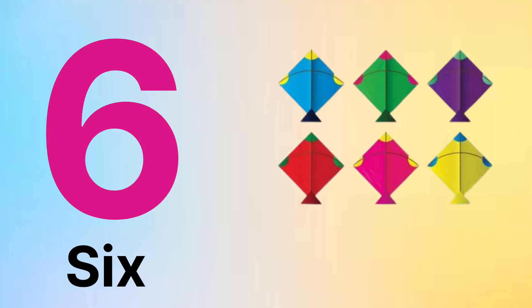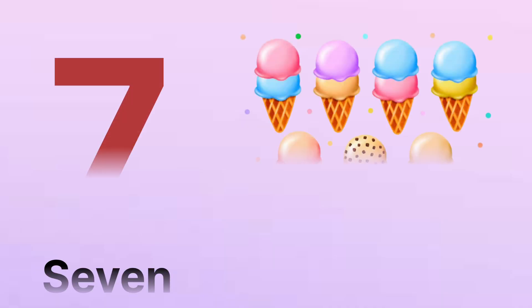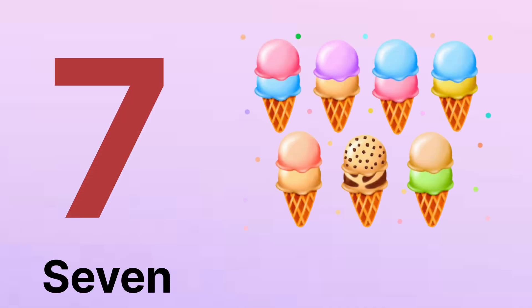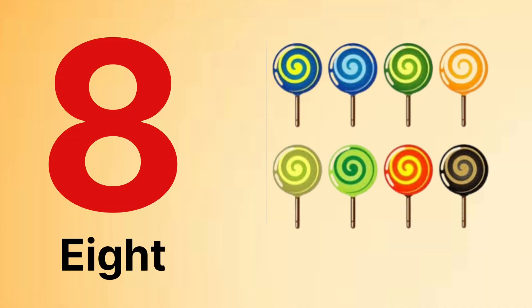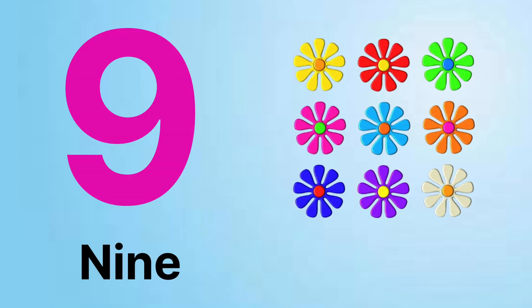6. S-I-X, 6. These are 6 kites. 7. S-E-V-E-N, 7. These are 7 ice cream. 8. E-I-G-H-T, 8. Lollipops. 9. N-I-N-E, 9. These are 9 flowers.